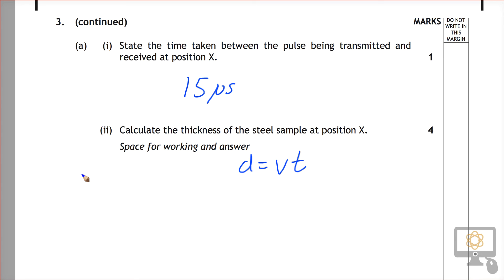So let's write our calculation here. The speed is 5200 meters per second and the time is 15 microseconds. I'm going to write that in standard form: 15 times 10 to the minus 6 seconds.